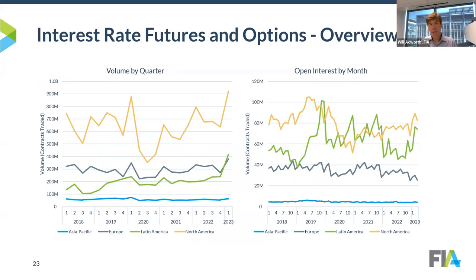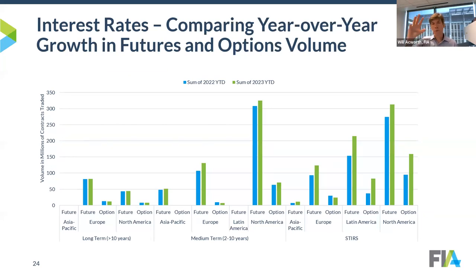On interest rate futures and options — we saw a tremendous reduction in activity during the pandemic year when interest rates went to zero, with not much appetite for interest rate risk. That has really rebounded, and in fact Q1 volume hit a record level. Open interest hasn't fully recovered, though there are positive signs. Comparing Q1 2023 to a year ago, the growth is concentrated in the STIR — short-term interest rate — complex, pretty much across the board in Europe, Latin America mainly B3, and North America, in both options and futures.